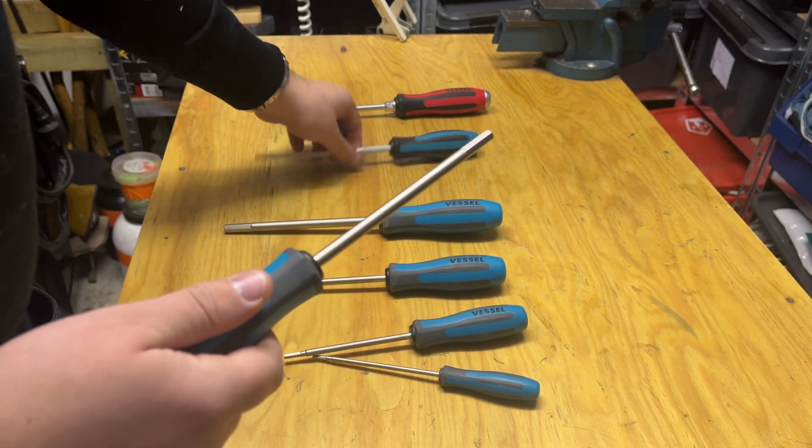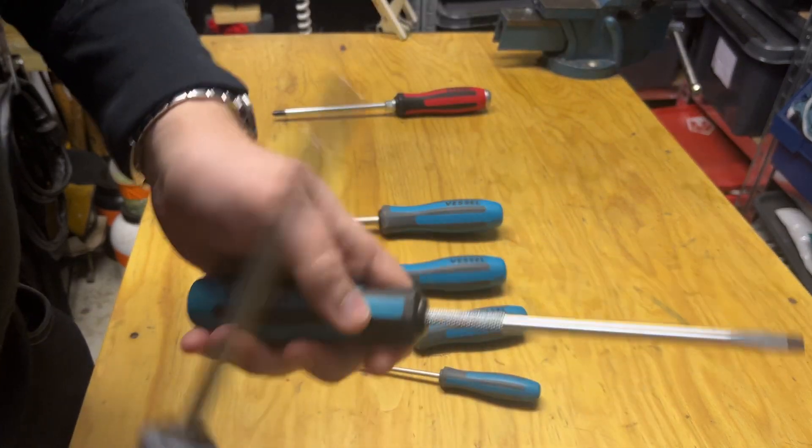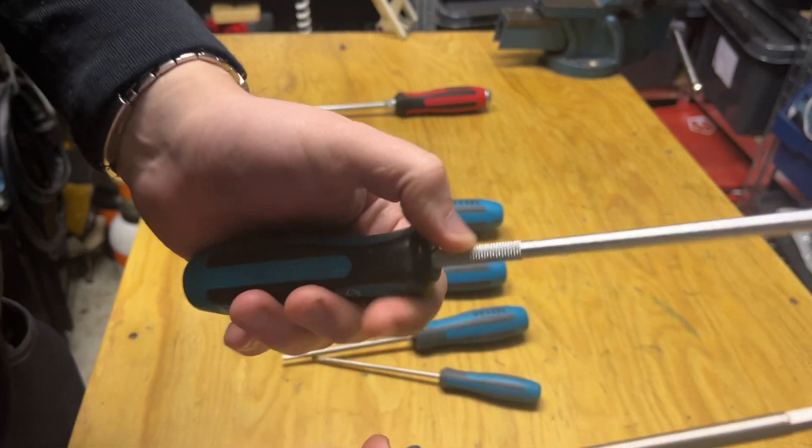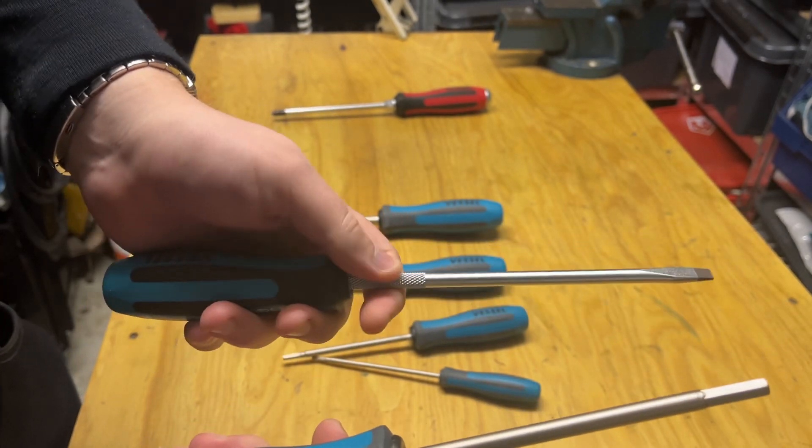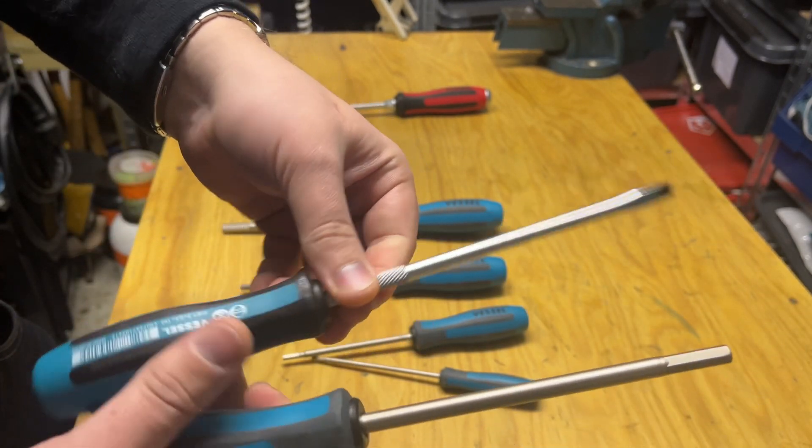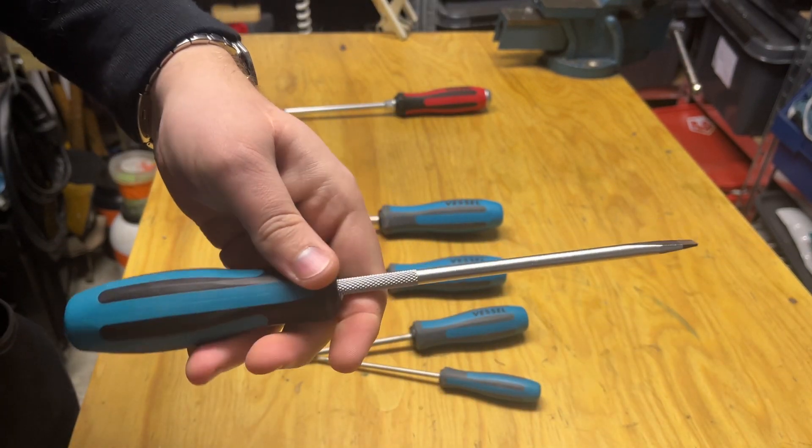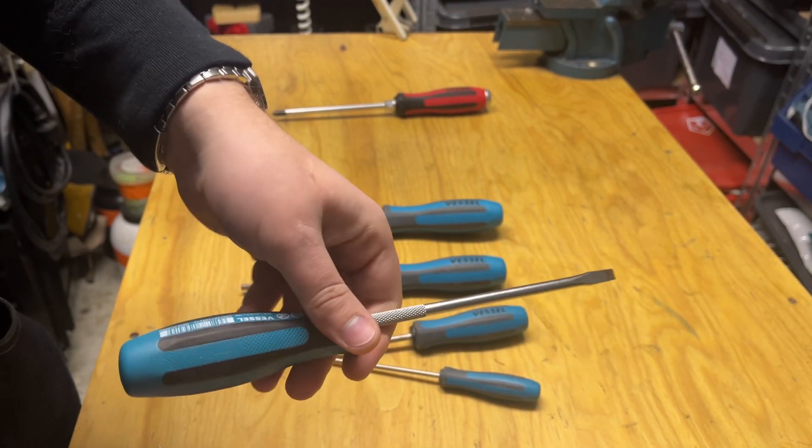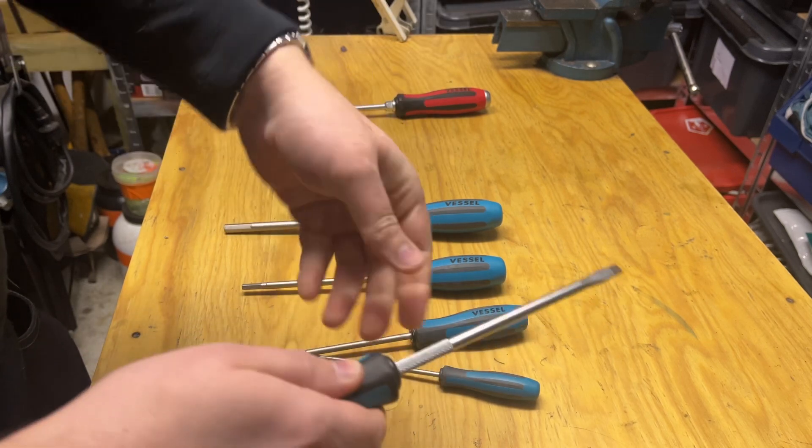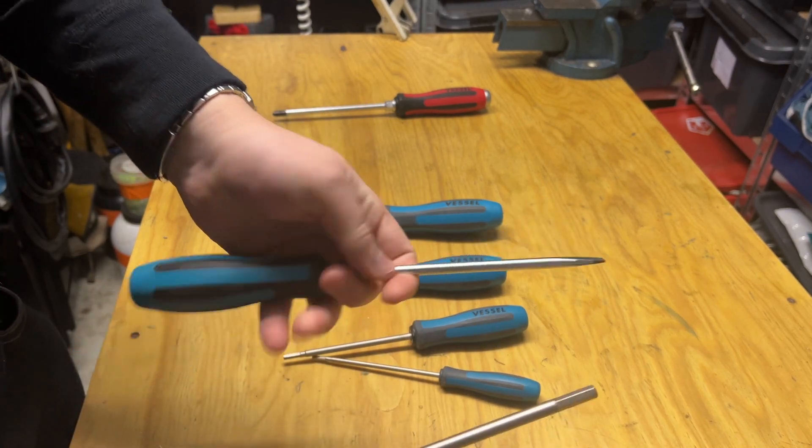One thing I've noticed with these is you don't get that textured checkered part that you usually would use to grip onto with pliers or something to give extra torque on whatever you're working on.